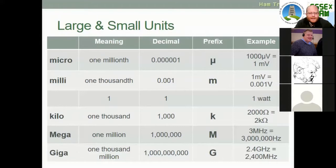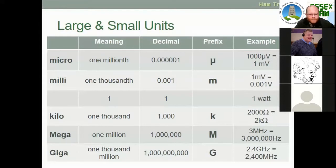Giga is 1000 million, with prefix capital G. You'll recognise this from computing — kilobytes, megabytes, gigabytes. So 2.4 gigahertz equals 2400 megahertz.